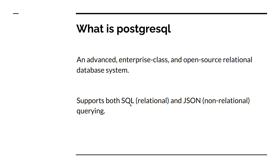But first of all we need to know what the Postgres database is. It is an advanced, enterprise-class and open-source relational database management system where you can perform both SQL and JSON queries. By SQL I mean the relational queries, and by JSON I mean the non-relational queries. Relational simply denotes the table-column format stored in RDBMS, while non-relational means data comes in key-value pairs, just like a JSON object.